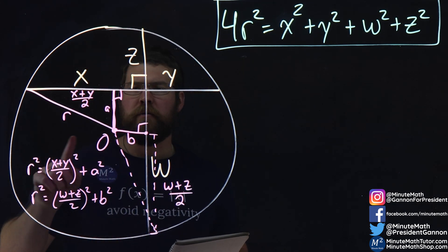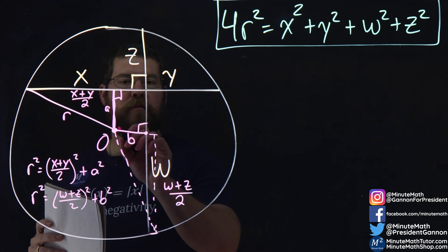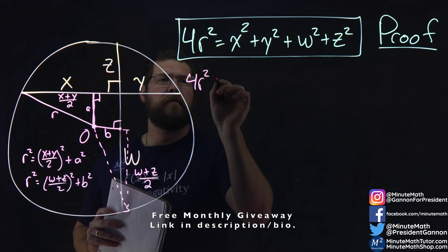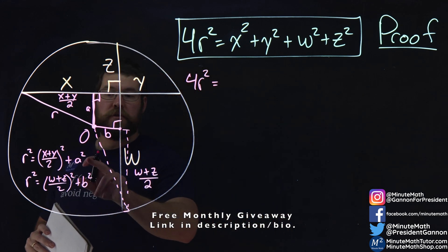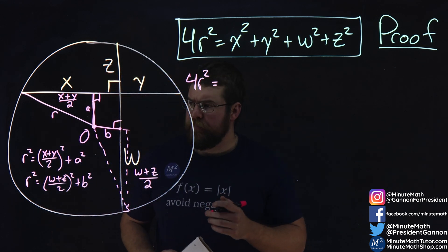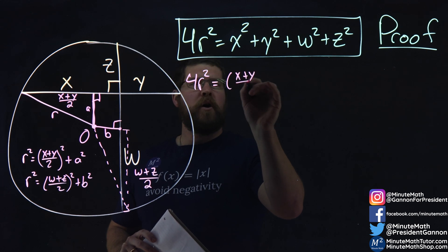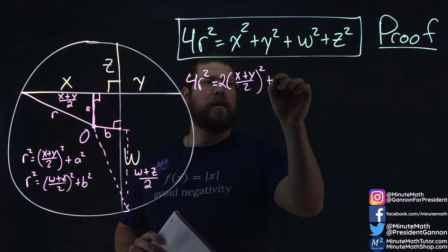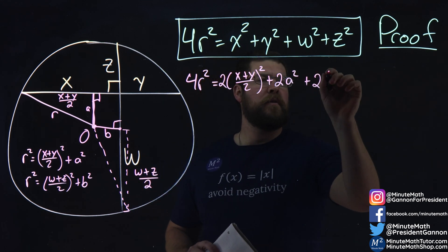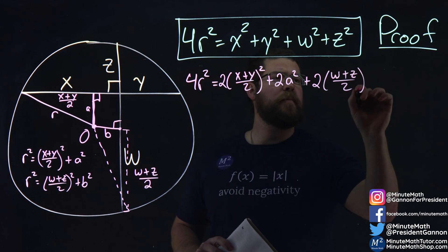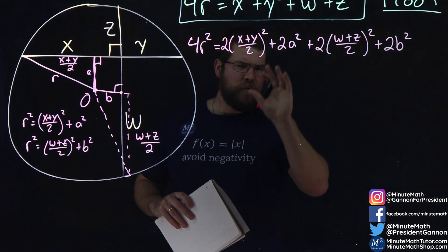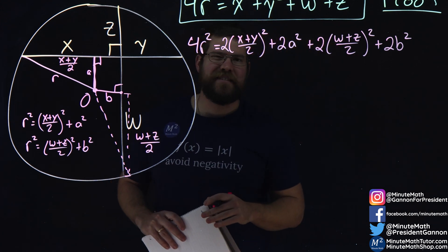Notice that this triangle can be written twice. We have this triangle again that comes over here, connects to this spot, and this one connects to this part of the chord. So four of them, 4r², would be equal to two of these and two of these added up. We have 2[(x + y)/2]² + 2a². Same idea here, 2[(w + z)/2]² + 2b². We're forming a way to break this up to get this nice formula.